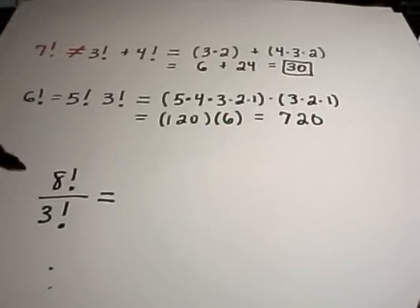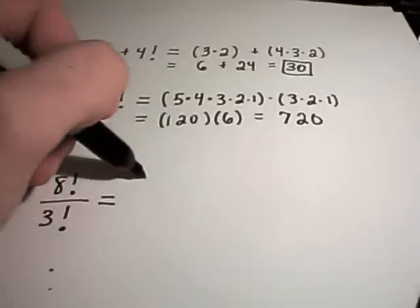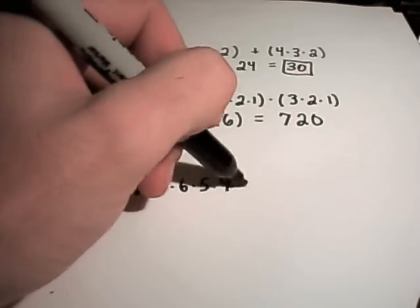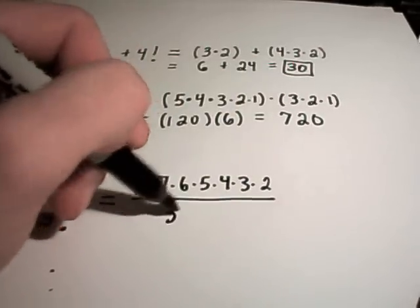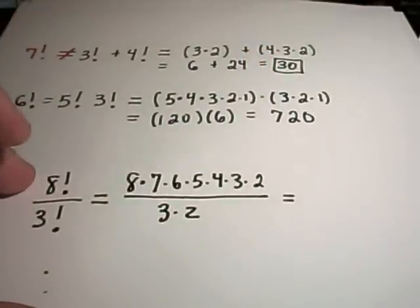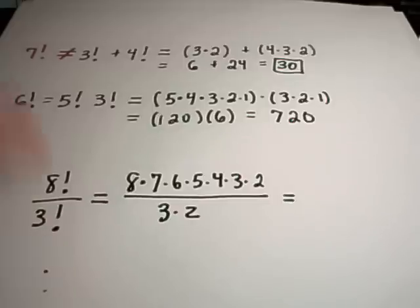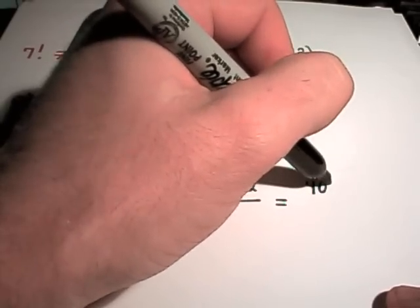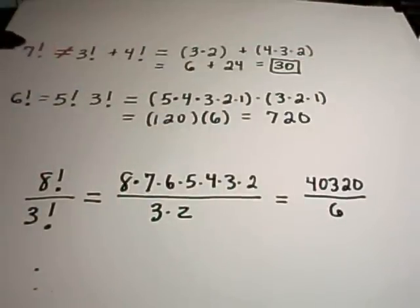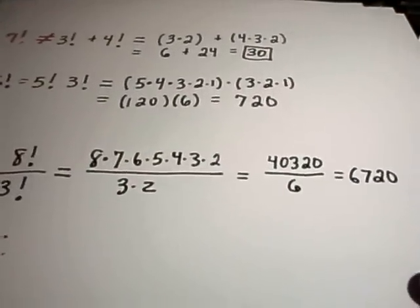Let's do 8 factorial over 3 factorial. Well, most calculators have a button with a little exclamation mark on it. 8 times 7 times 6 times 5 times 4 times 3 times 2, over 3 times 2. So 8 factorial - if you multiply out the top you get 40,320. On the bottom you get 6. And if you divide that number by 6, you simply get 6,720.